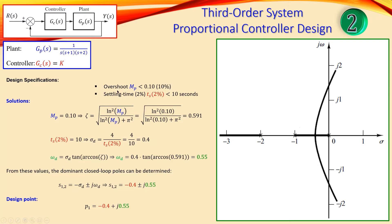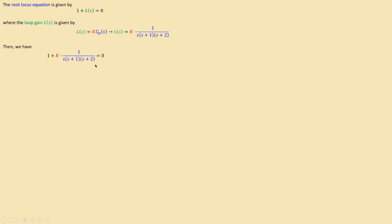We need to determine the required value of k to stay below the maximum allowed values for settling time and overshoot. The root locus equation is given by 1 + L(s) = 0, where L(s) is the loop transfer function. In this system L(s) = k × G_plant = k / [s(s+1)(s+2)]. Substituting and multiplying both sides by the denominator gives the characteristic equation, from which we isolate k.